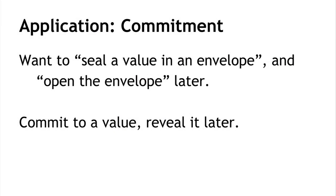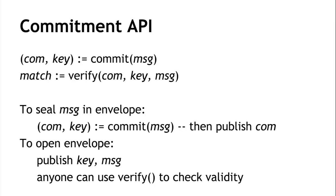Now let's look at an application of the hiding property: the commitment scheme. This is the digital analogy of sealing a value in an envelope and putting it on a table for everyone to see. The commitment API works like this: you commit to a message, which returns a commitment and a key — think of the commitment as the envelope and the key as a secret key for unlocking it. Later, you allow someone to verify, given the commitment, key, and message, that they really do go together.